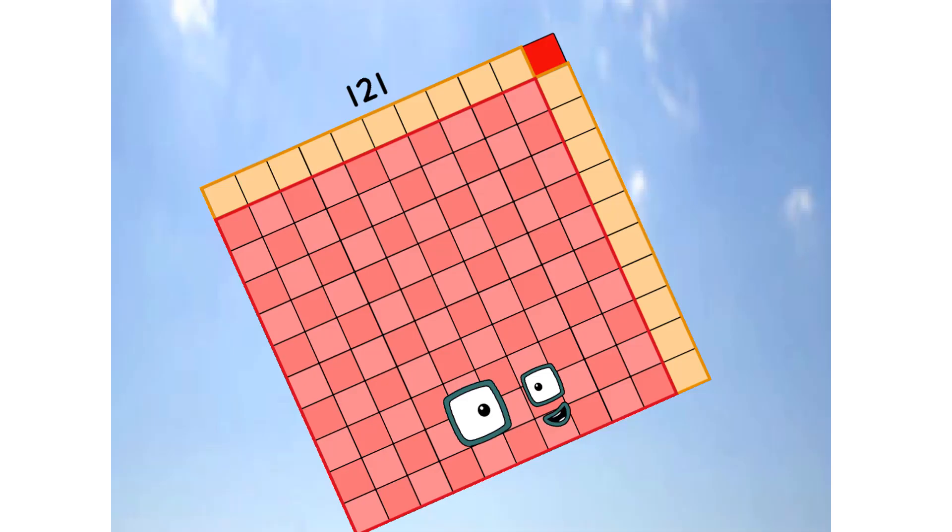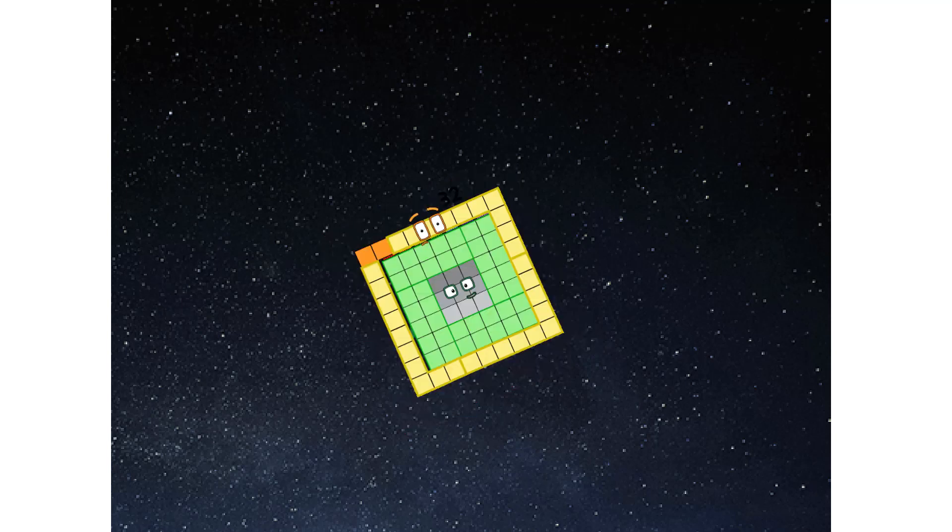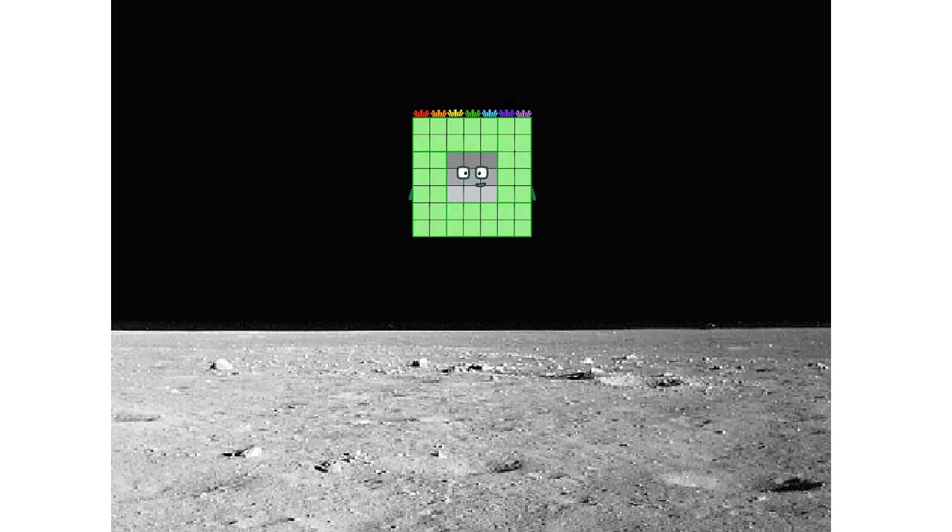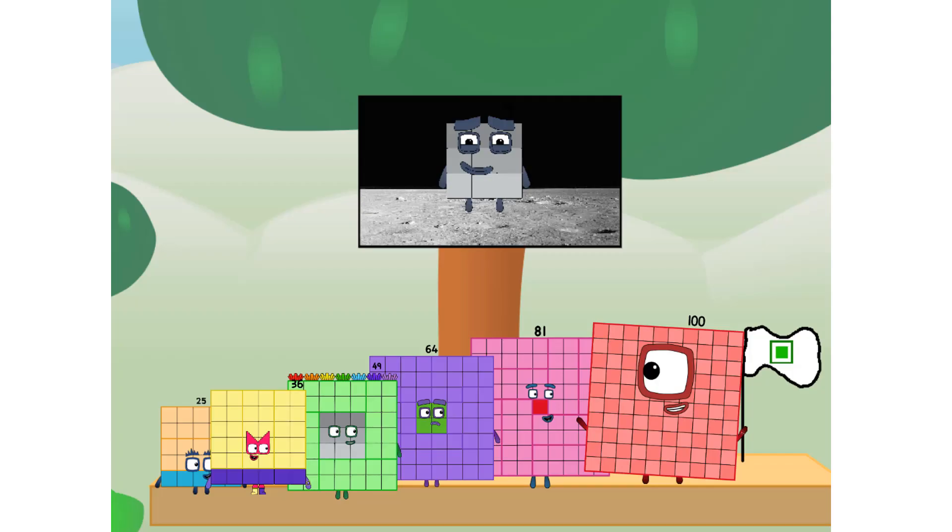Primary launch stage completed. Engaging secondary star. We've reached space. Second stage complete. Entering lunar orbit. Launching lunar lander. The square has landed. We did it.